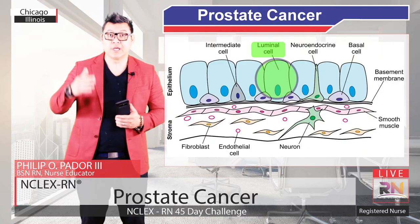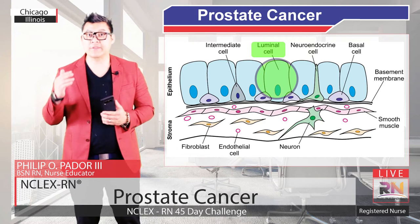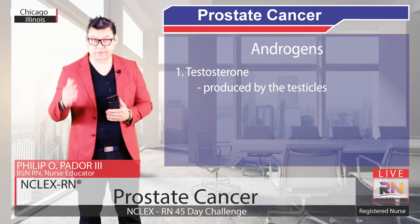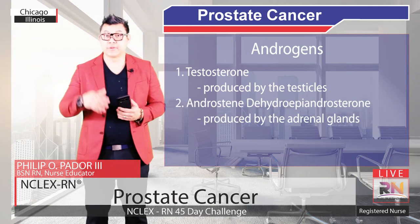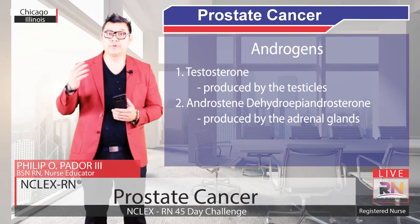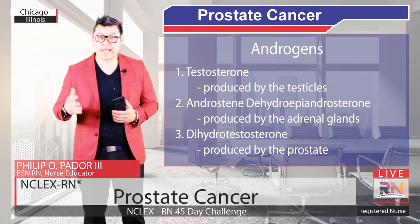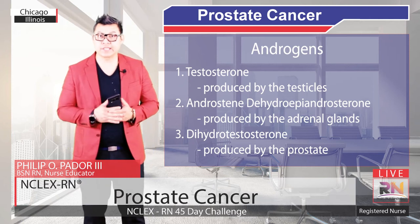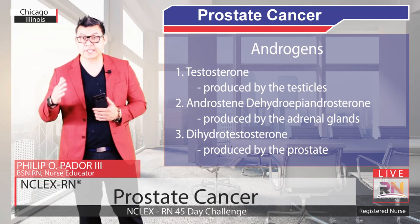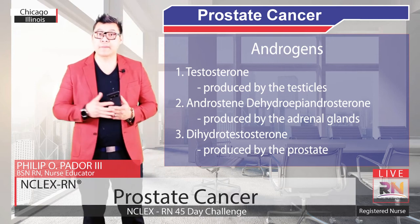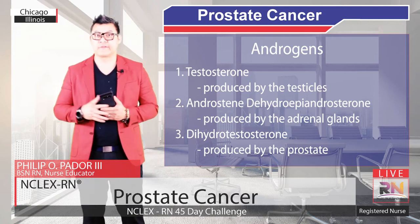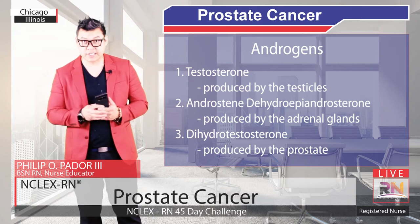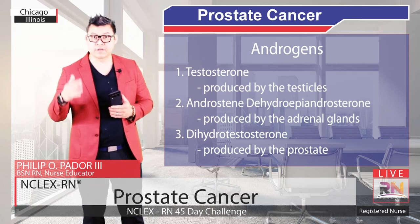The basal cells and the luminal cells of the prostate rely on stimulation from androgens or male sex hormones for survival. The androgens include testosterone, which is produced by the testicles; androsterone and dehydroepiandrosterone, which are produced by the adrenal glands; and dihydrotestosterone, which is made from testosterone by the prostate itself. Without these androgens, the normal prostate cells, particularly the luminal cells, cannot survive and undergo apoptosis or programmed cell death. For example, if the testicles are castrated or removed for some reason, the prostate significantly shrinks in size, largely due to the death of the luminal cells.